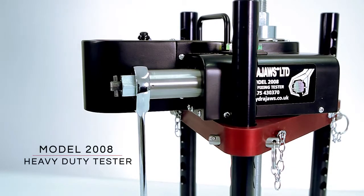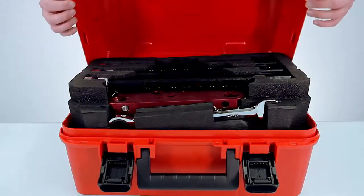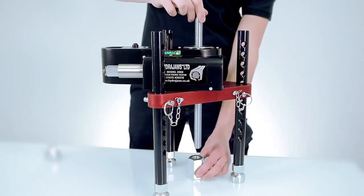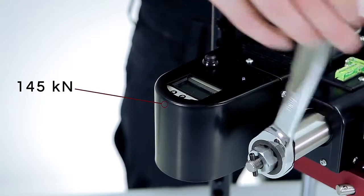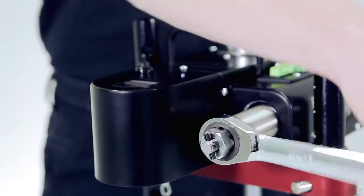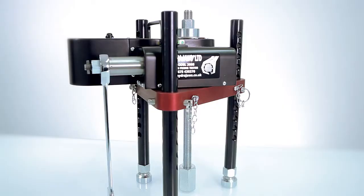The HydraJaws model 2008 is a compact portable tester used to test heavy-duty fixings, anchors, and eye bolts to a load of up to 145 kilonewtons. This portable, self-contained heavy-duty tester has been designed to meet the demands for proof load testing of larger construction fixings.